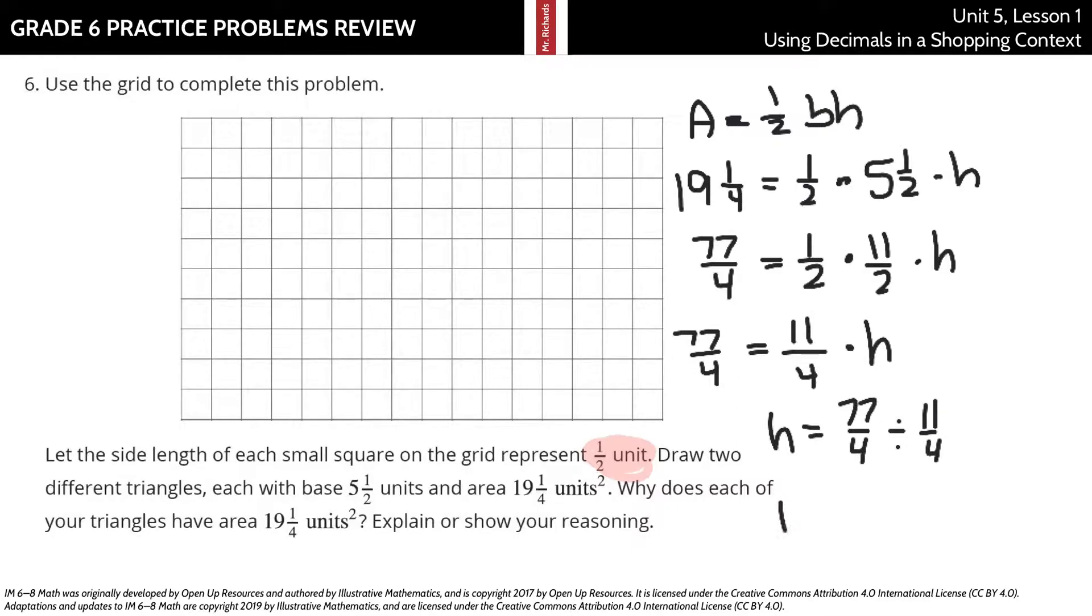So we have 77/4 is equal to now multiplying what we have here. 1 times 11 and 2 times 2. 1 times 11 is 11. 2 times 2 is 4 times h. Well, if 77/4 is equal to 11/4 times h, h is going to equal 77/4 divided by the 11/4. And now we need to keep, change, flip, and we actually have some simplifying we can do here. The 4 and the 4 we can both divide by 4 and get 1 and 1. The 77 and 11 here we can actually divide by 11 and get 7 and 1. So it's a lot of math there, but basically we get down to our height is going to be 7 units. And the height is going to be 7 units for both of these triangles.